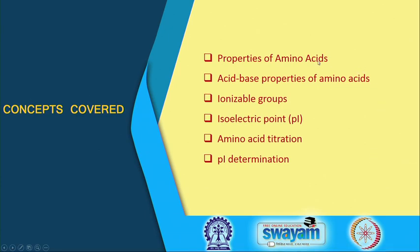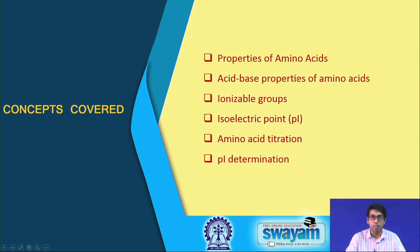We learnt about the properties of amino acids. Amino acids have an amino group and a carboxyl group which gives them this acid-base property. These amino and carboxyl groups are the ionizable groups, and we also learnt that there are some amino acids which have additional ionizable groups in their side chain — for example, aspartic acid or glutamic acid which have an acidic side chain, or lysine, arginine and histidine which have a basic side chain.